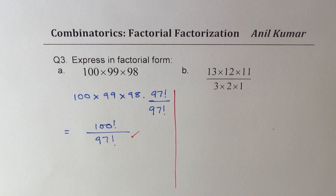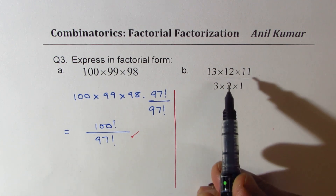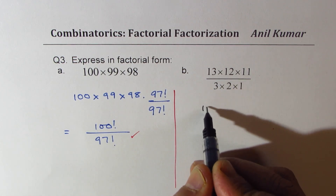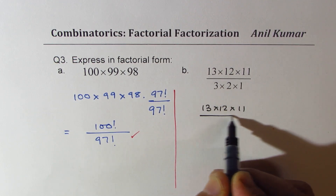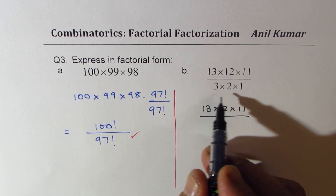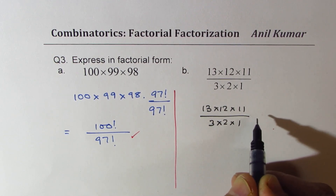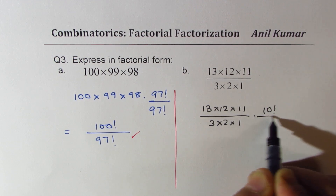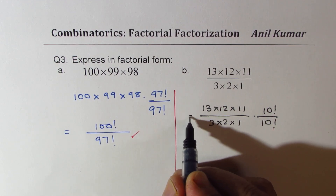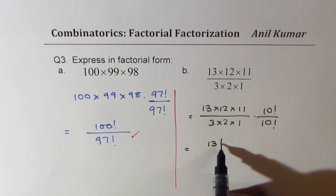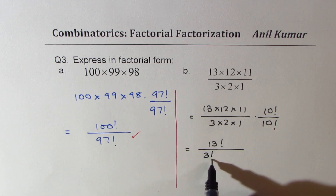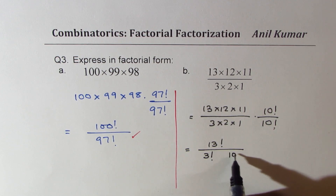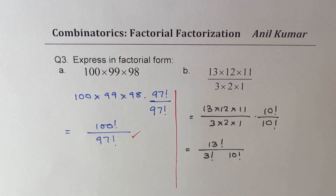We also have 13 times 12 times 11 in the numerator and 3 times 2 times 1 in the denominator. To convert to factorial form, multiply and divide by 10 factorial. That gives us 13 factorial on top, and 3 times 2 times 1 is 3 factorial, with 10 factorial in the denominator. So the factorial form is 13 factorial divided by (3 factorial times 10 factorial).